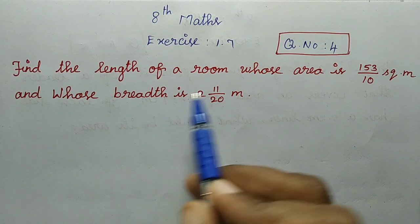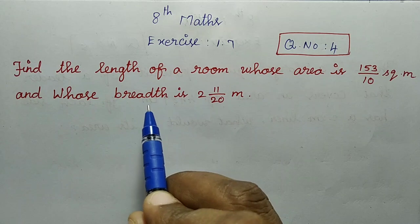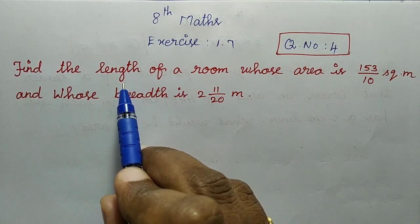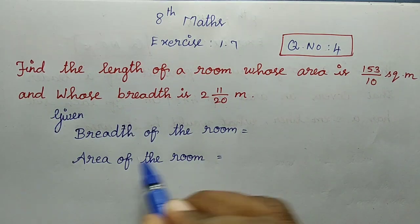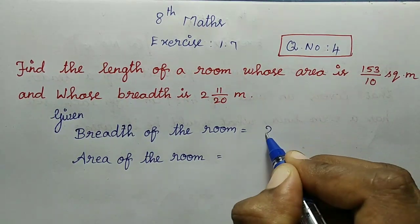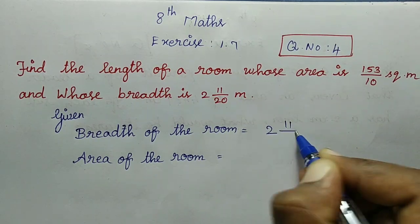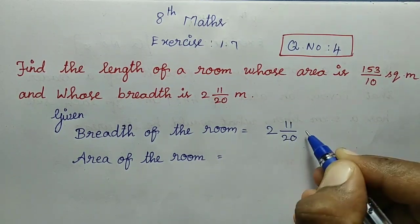Here we have a room with area and breadth given. We will find the length. The breadth of the room is 2 and 11 divided by 20 meters.